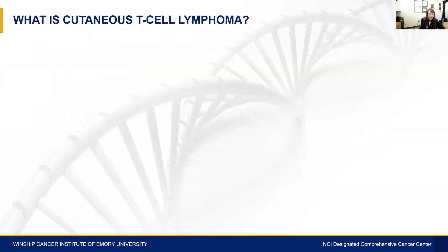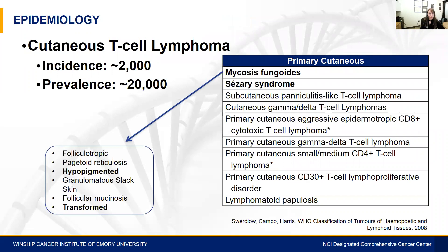What is cutaneous T-cell lymphoma? CTCL is a rare type of non-Hodgkin lymphoma that originates in the skin. The incidence is 2,000 cases per year, but the prevalence is much higher because this is a chronic disease in most patients. The two most common subtypes are mycosis fungoides and Sézary syndrome. But even among mycosis fungoides, there are several additional histiopathologic and clinical subtypes, including hypopigmented and transformed disease.